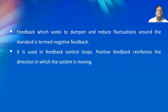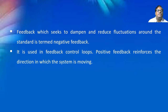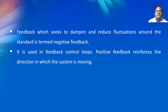Feedback which seeks to dampen and reduce fluctuations around the standard is termed negative feedback; it is used in feedback control loops. Positive feedback reinforces the direction in which the system is moving.